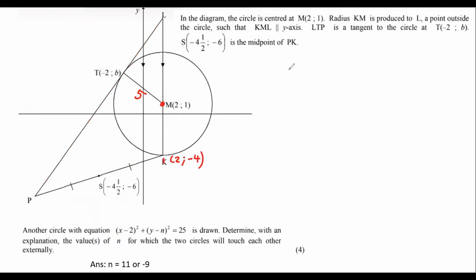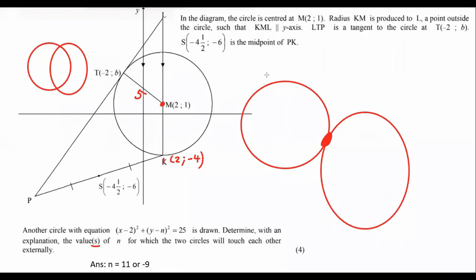So this is an excellent question, actually. It says that another circle with equation like that is drawn. Determine with an explanation, the value or values of N for which the two circles would touch each other externally. So what does it mean for two circles to touch externally? It means like this. So there's the one circle, and there's the other. Notice that they are touching externally. What does it mean if they touch internally? It looks more like this. See, because then they're touching each other, but they are inside, they are crossing over. That means that they are touching internally, or they're intersecting.